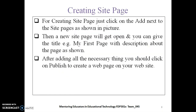Now let us see how to create a site page in WordPress. For creating a site page, just click on Add next to Site Pages as shown in the picture. A new site page will open and you can give it a title — for example, here I have given 'My First Page' — with a description about the page below that. After adding all the necessary content, click on Publish to create the web page.